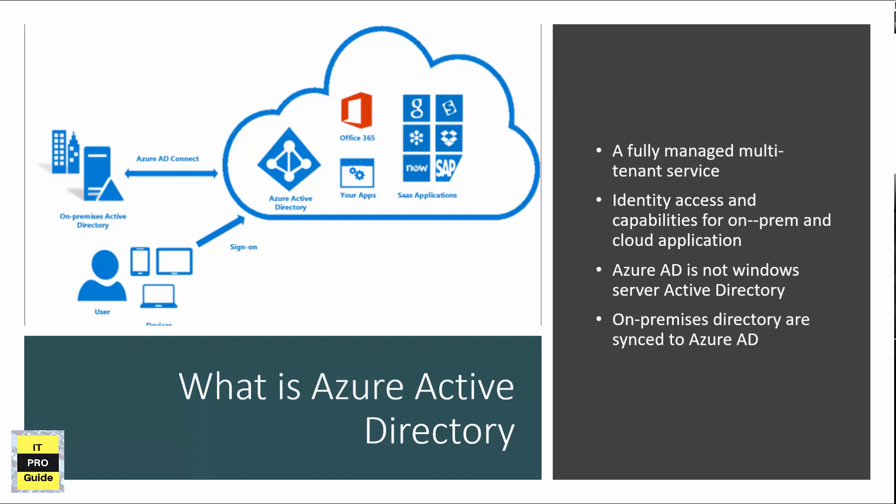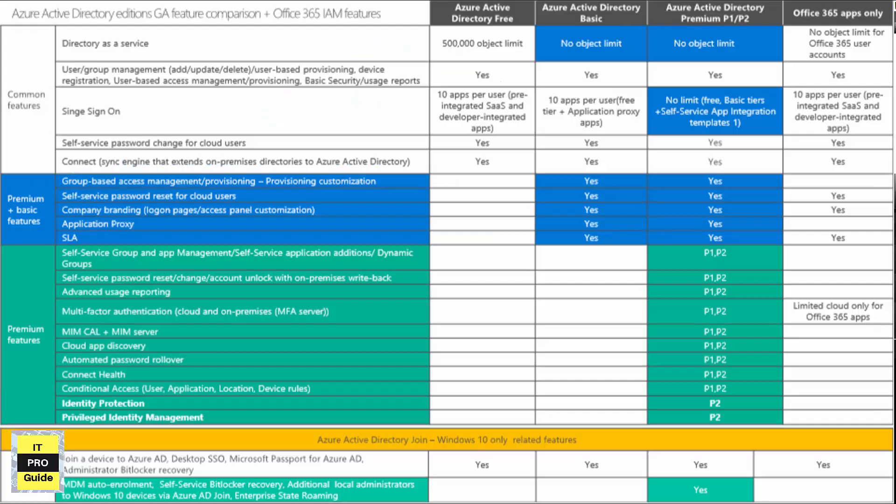What you see now is a comparison chart of Azure Active Directory features across different editions. There are three editions: Azure Active Directory Free, Basic, and Premium. Office 365 also provides some Active Directory features. The common features available for free include 500,000 objects and single sign-on for up to 10 apps per user.